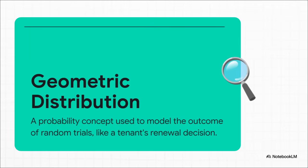It's actually governed by a core mathematical principle called the geometric distribution. Now don't worry, we're not going to get lost in the formulas. But think of it like this. It's the math that helps you figure out the odds of flipping a coin over and over until you finally get heads. It's the same principle for predicting when a tenant might finally land on that perfect 12-month renewal.